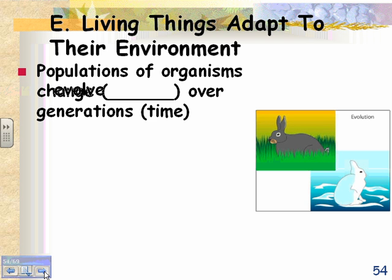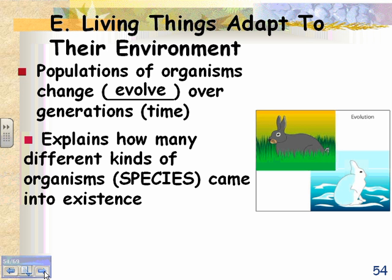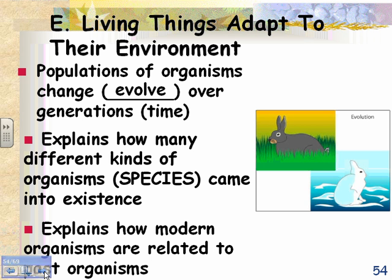Living things adapt to their environment — that's our next characteristic of life. Populations of organisms change or evolve over time and over generations. This explains how many different kinds of organisms or species came into existence, how modern organisms are related to past organisms, and how organisms are related to each other. For example, here are two different types of bunnies: one lives in places that aren't necessarily white, like around here in Massachusetts.